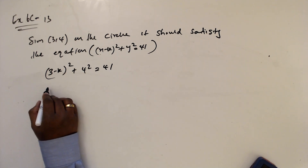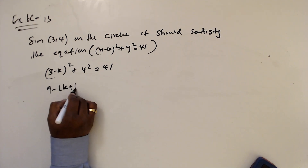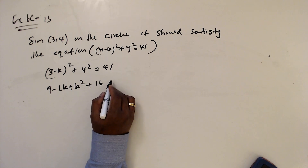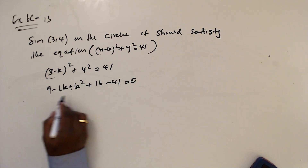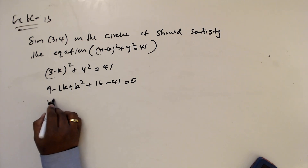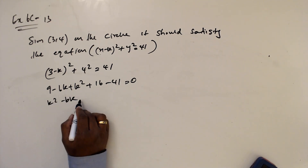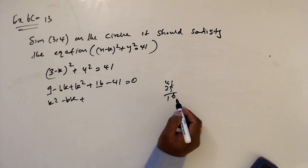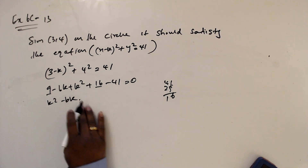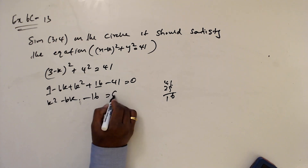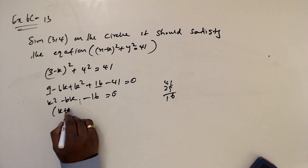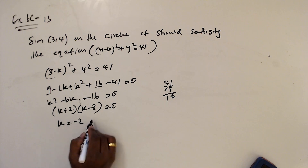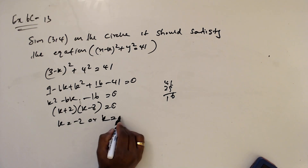Expanding: 9 minus 6k plus k squared plus 16 minus 41 equals 0. Simplifying: k squared minus 6k plus 25 minus 41 equals 0, giving k squared minus 6k minus 16 equals 0. Factoring: k plus 2 times k minus 8 equals 0, so k equals minus 2 or k equals 8.